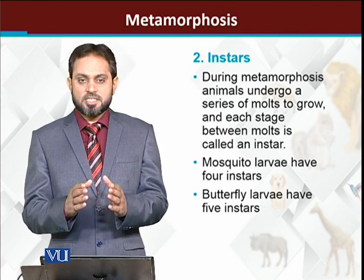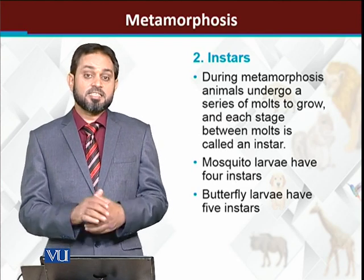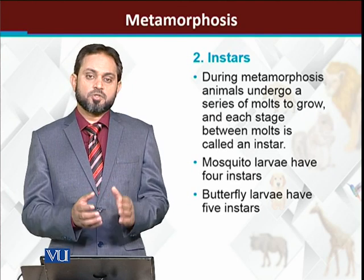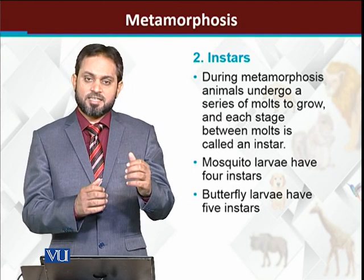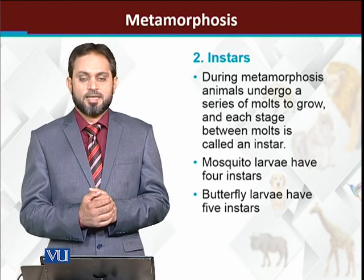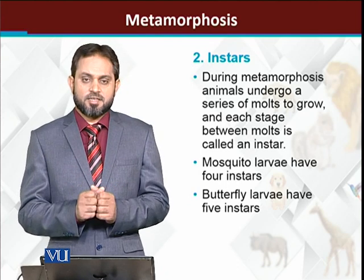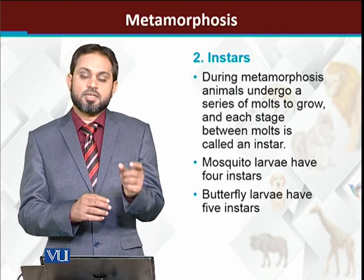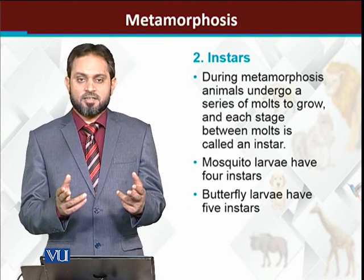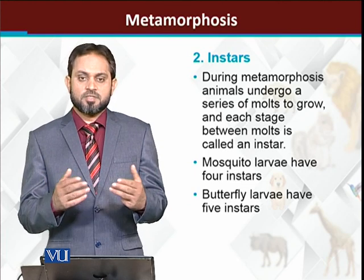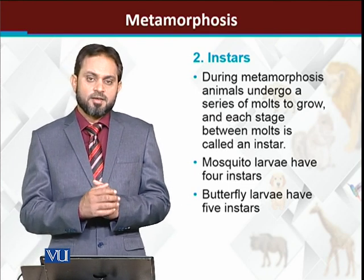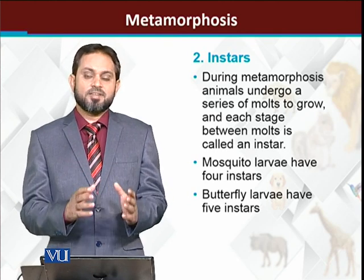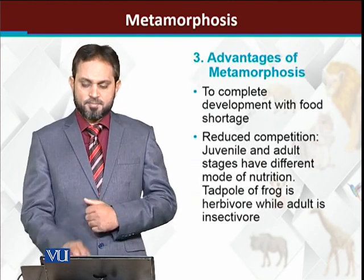For example, mosquitoes have four instar larvae. After the four instars, the larva converts into pupa. Similarly, in the case of butterflies, they have five instars. The first sub-stage begins when it hatches from the egg, and it progresses through the instars as it grows and molts. After five instars, the butterfly larva is converted into the pupa.